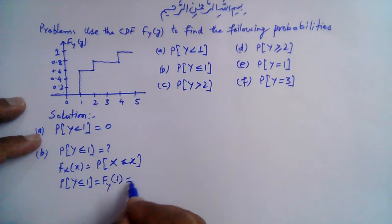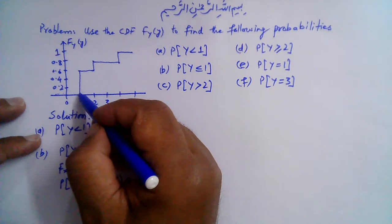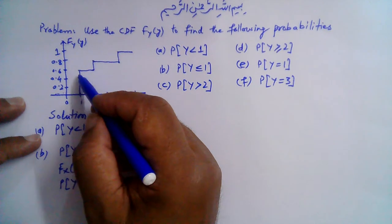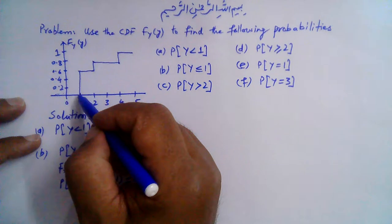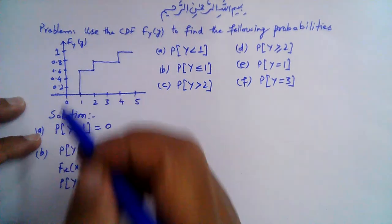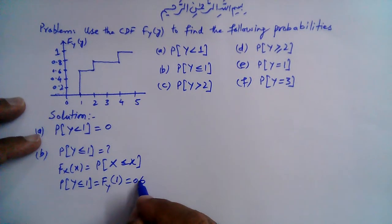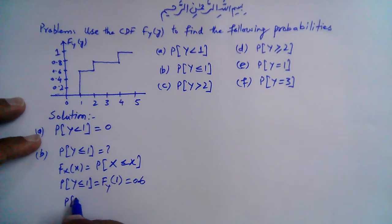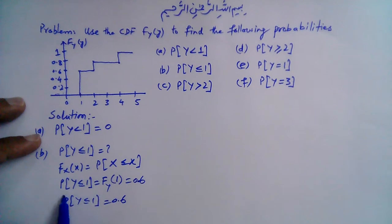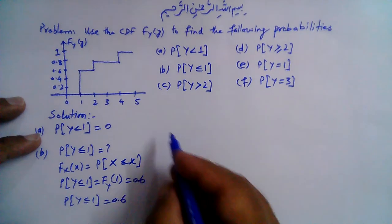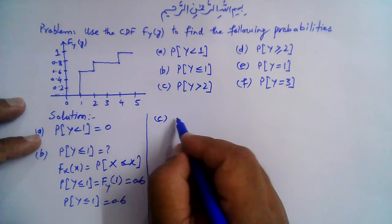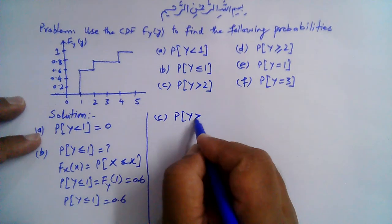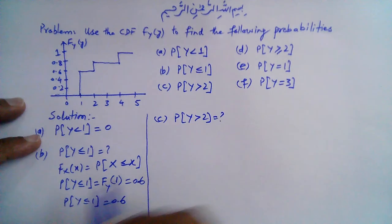At 1, the CDF has two values, but from the CDF we take the upper value. So the value of the CDF at 1 is 0.6. Therefore, the probability that Y is less than or equal to 1 is 0.6.